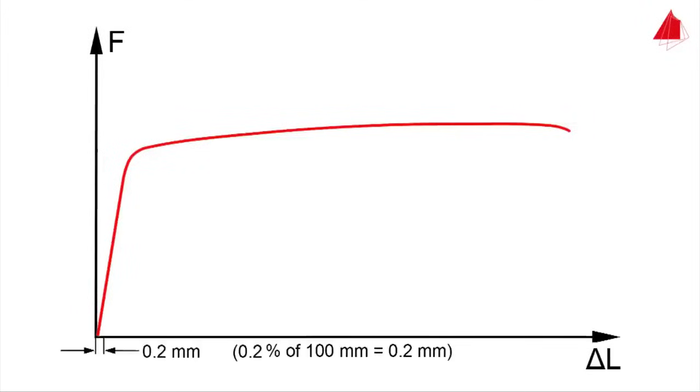And this is the way to calculate it. First of all, the elongation that corresponds to 0.2 percent of strain has to be computed. For an initial gauge length of 100 millimeters, the result is 0.2 millimeters. In the force-elongation diagram, a straight line parallel to the elastic line is drawn through the offset point of 0.2 millimeters of elongation. The force at the intersection point of the offset line with the force-elongation diagram is designated as Fp0.2. This is the force that causes a plastic strain of 0.2 percent.